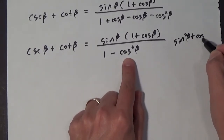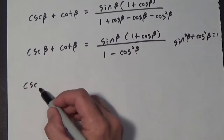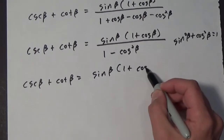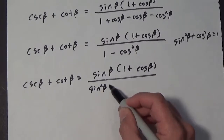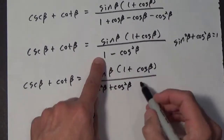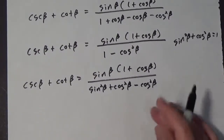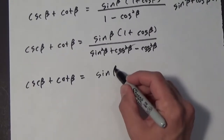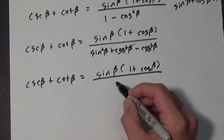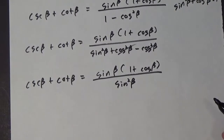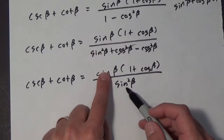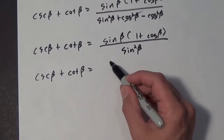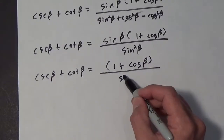We like the cosine squared because it gives us the Pythagorean identity. Sine squared of beta plus cosine squared of beta equals 1 — I'm going to substitute in for 1. So we have the cosecant of beta plus the cotangent of beta equals the sine of beta times 1 plus the cosine of beta all over sine squared of beta plus cosine squared of beta. The cosine squareds cancel out, giving us the sine of beta times 1 plus the cosine of beta all over sine squared of beta.